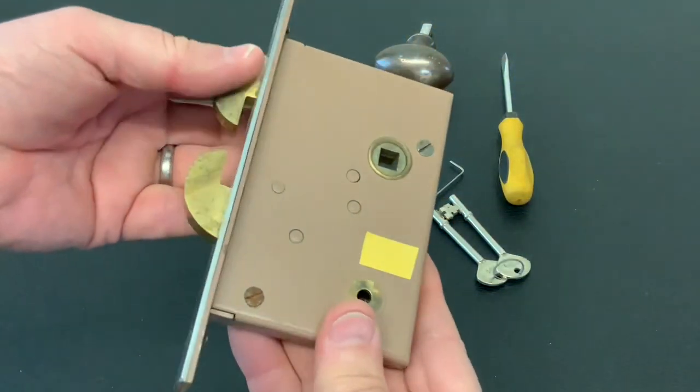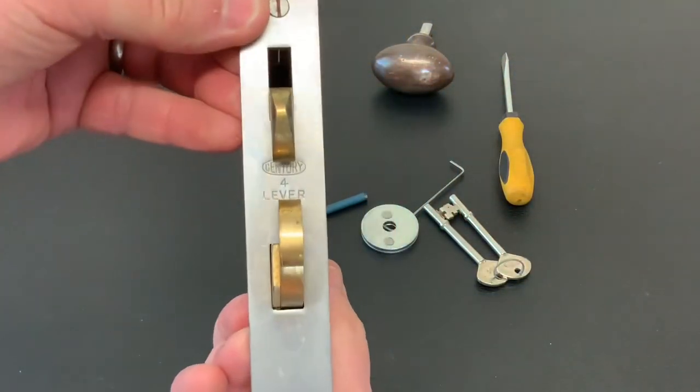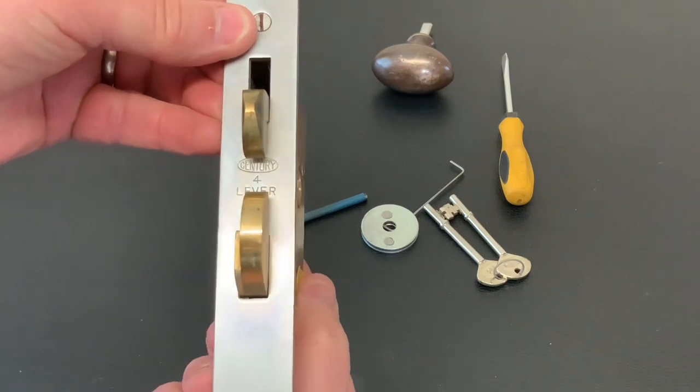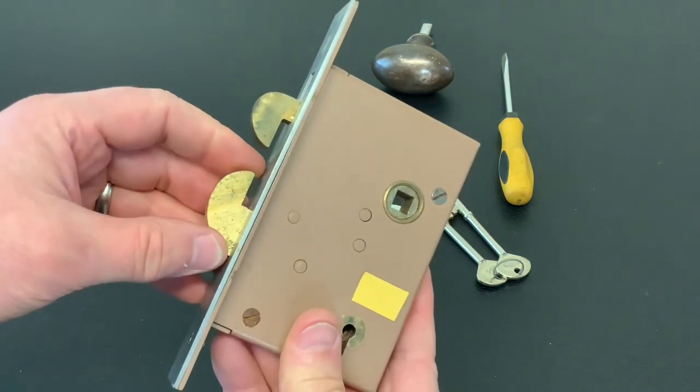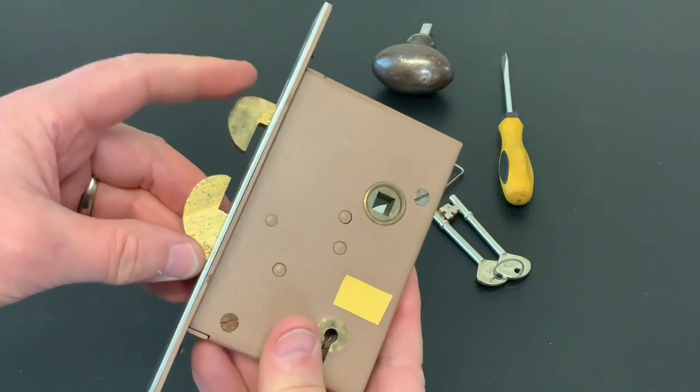I've got a little mortise lock today. This one's a bit different - it's made by a company called Sentry. It's a four-lever, and instead of having bolts, it's got hooks. When it's locked, the top hook is locked as well.